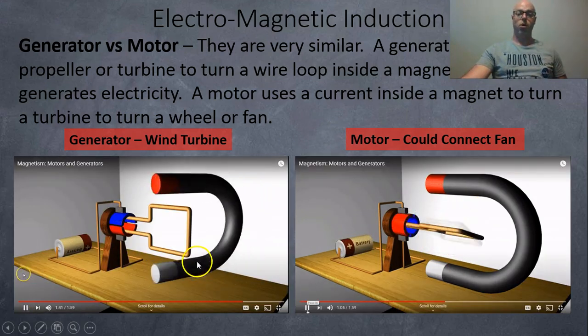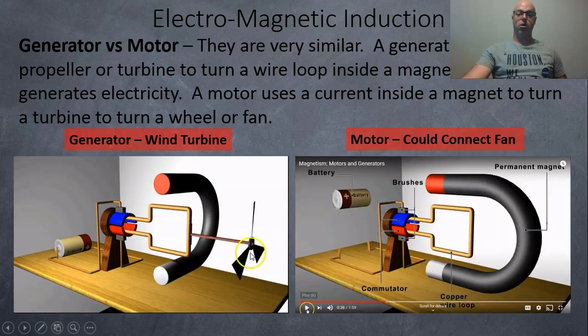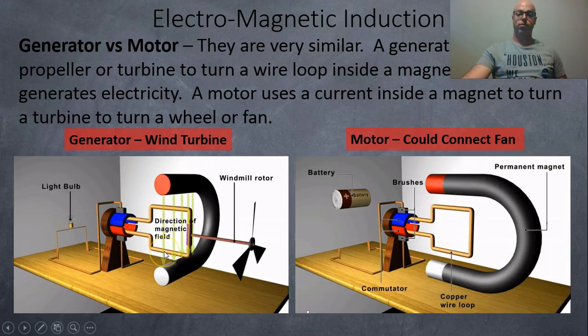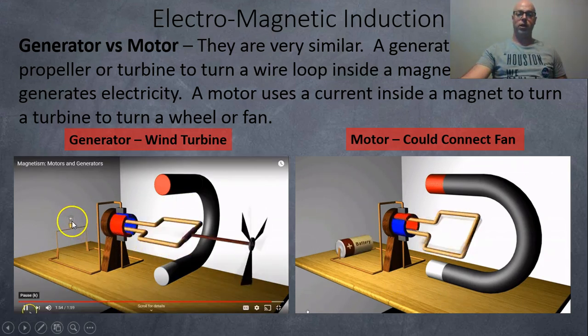There we go. Once more, you attach a fan blade, wind blows, turns the coil inside the magnetic force field. And that lights up the light bulb.